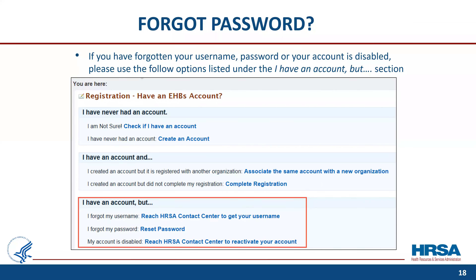If you have forgotten your username, password, or your account is disabled, please use the following options outlined in red. 'I forgot my username' will provide you with the EHBs customer support center's contact information to call and obtain your username. 'I forgot my password' will provide contact information to call and have your password reset, or you can click the reset password button to obtain a new password. 'My account is disabled' will provide you with contact information to call and reactivate your EHBs account.